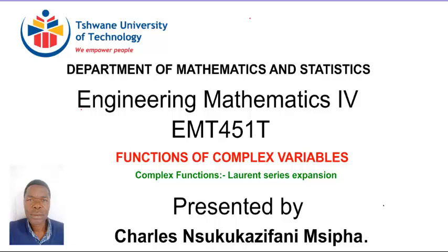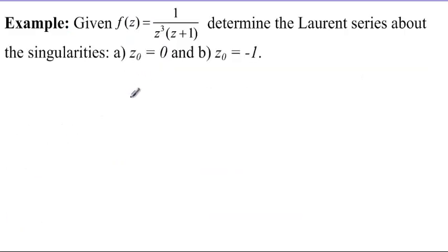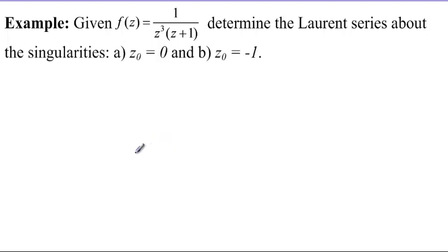Say we're given this example: given f(z) equals 1 over z cubed times (z plus 1), determine the Laurent series about the singularities z₀ equal to 0 and z₀ equals to minus 1. Given such an exercise, first of all we need to reflect and think about how the solution for each of these options should look like.